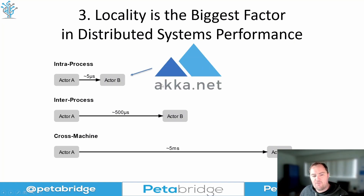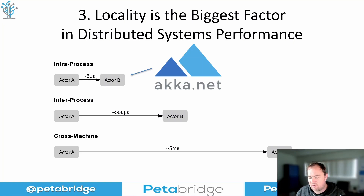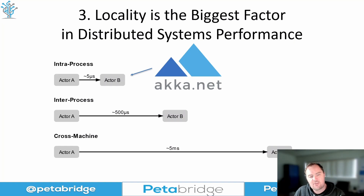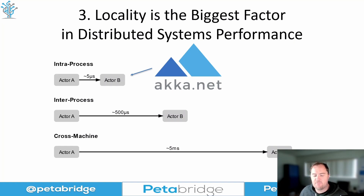Aka.NET by default generally operates locally because whenever you call ActorOf you're getting a local actor that is adjacent in memory in the same process. So if you're trying to keep latency down and process large bursts of messages, you have to have a hand on the steering wheel with how allocation works, and Aka.NET is the simplest tool out there for actually achieving that. Everything else has many more moving parts and is much more complicated by comparison.